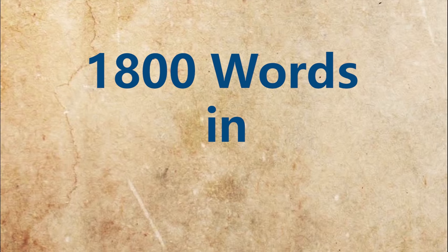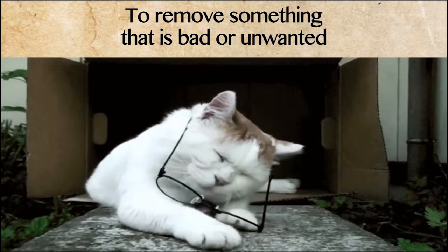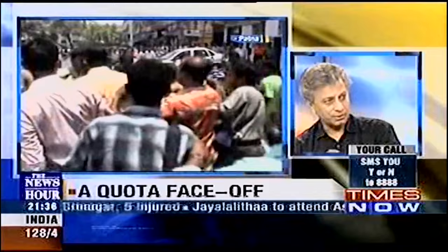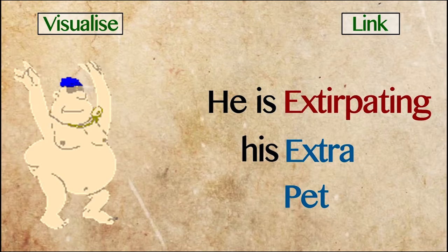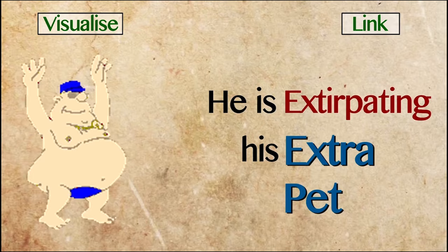Memorize 1800 words for GRE in just 18 hours with audio-visual technique. The first word is extirpate, meaning to remove something. Usage: 'Attempt to extirpate superstition.' In Ambedkar's reservation, people with no assets were given a chance to gain assets so that the caste system could be extirpated once and for all. Link and visualize: 'extra' means more and 'pate' means stomach — a fat man exercising to remove his extra pate, extirpating his extra pate.